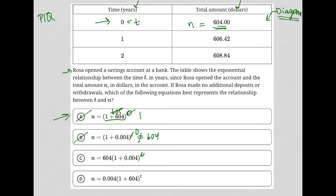Choice C, if I replace T with zero, this whole thing becomes 1. 604 times 1 is 604. So that looks good.